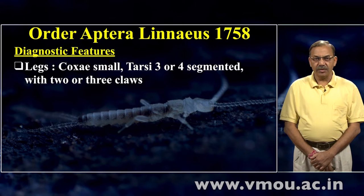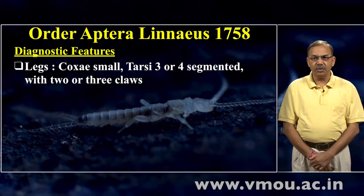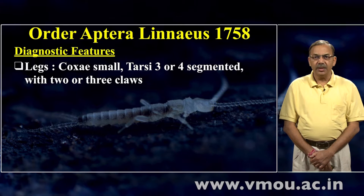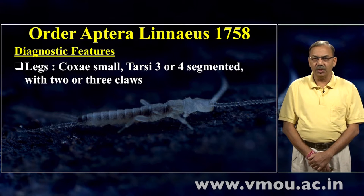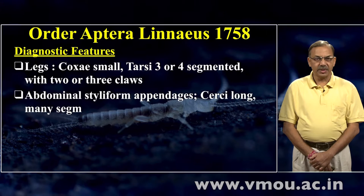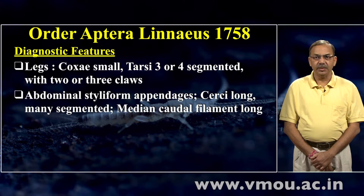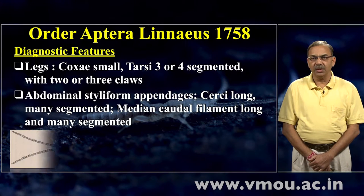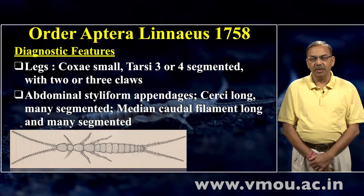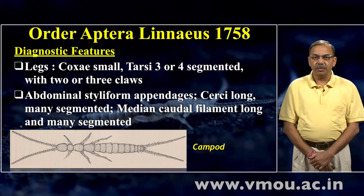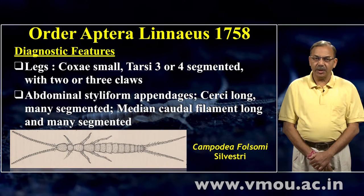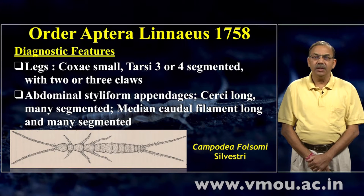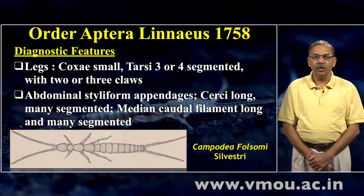इसके diagnostic features देखें: legs हैं, coxa बहुत छोटा है, tarsi तीन या चार-segmented हैं with two or three claws। Abdomen में styliform appendices हैं। Cerci बहुत long और बहुत ज्यादा segmented हैं। Median filament इसमें उपस्थित नहीं है। Compound eyes और Ocelli दोनों ही अनुपस्थित हैं।